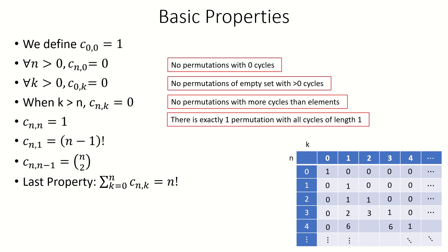The last property we're going to look at before the recursive relation is the summation over k of c sub n k. Fixing n and summing over k from 0 to n, we count the distinct permutations with one cycle, two cycles, and so on. Since all permutations of n elements have between 1 and n cycles, the sum gives us the total number of permutations of n elements, which is n factorial. You can see this in the row sums of our table.